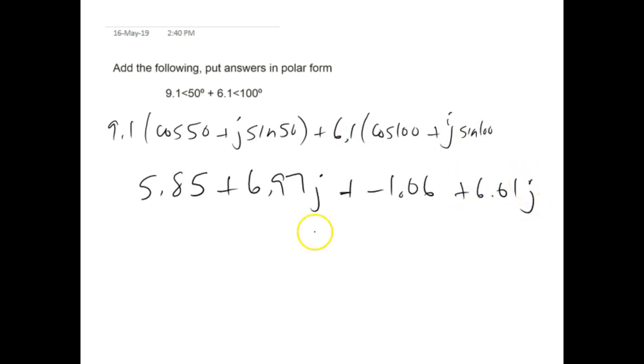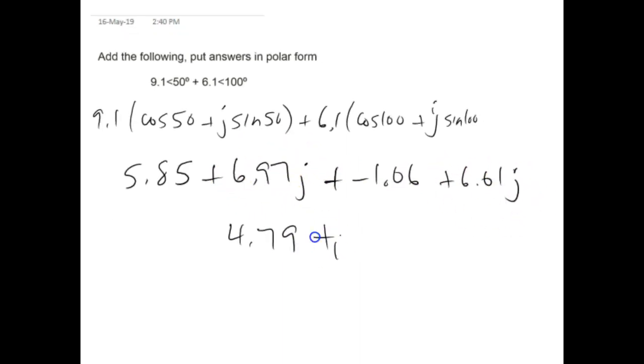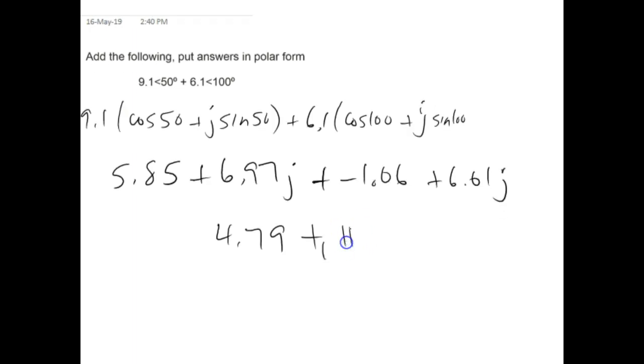Now we're going to add like terms. So we're going to add the a terms, 5.85 plus negative 1.06 to give me 4.79. Then we're going to add our two j terms together to give me a total of 11.86j.